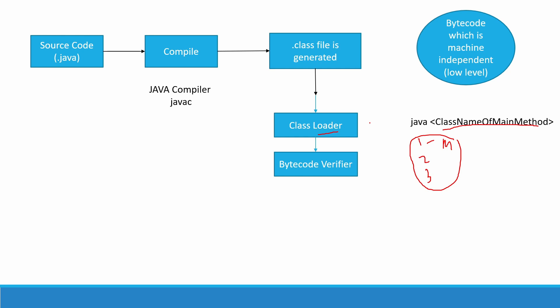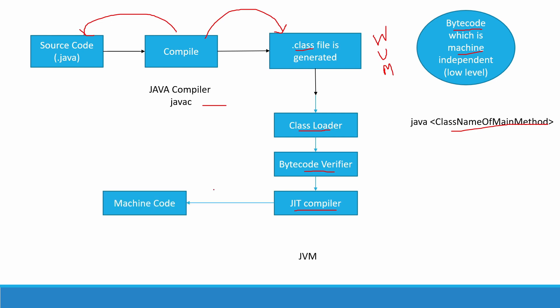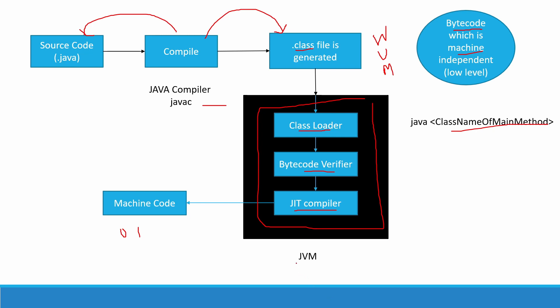The next and most important step: once the bytecode verifier has verified our bytecode, we need to convert our bytecode into machine code. The computer cannot understand bytecode — the computer understands machine code, which is always in zeros and ones. Bytecode is not directly readable by the computer. So here is the Just-In-Time compiler, whose function is to convert the bytecode to machine language. The JIT compiler generates machine code in zeros and ones. All three steps — the class loader, bytecode verifier, and the Just-In-Time compiler — together form the JVM, the Java Virtual Machine.